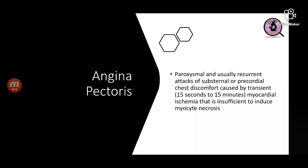Angina pectoris consists of paroxysmal and recurrent attacks of chest pain associated with the heart, usually substernal or precordial. Angina is usually transient — lasting 15 seconds to 15 minutes — which is insufficient to induce necrosis. It is just that myocardial demand is increasing, causing stress on the muscle and leading to pain, with no necrosis occurring.